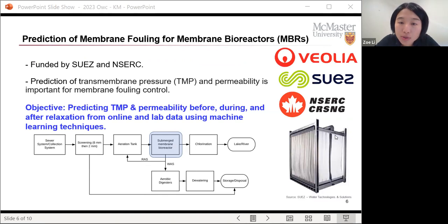So now moving on to our specific project. So this project was founded by SUEZ and NSERC. SUEZ is now called Veolia. And the focus or the objective is to predict TMP, transmembrane pressure, and permeability during different cycles. So TMP and permeability, they are considered as very important indicators of membrane fouling. That's why they are our target variables.